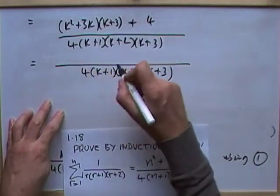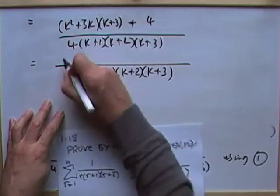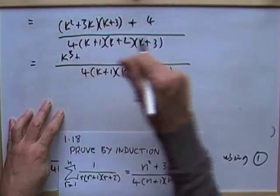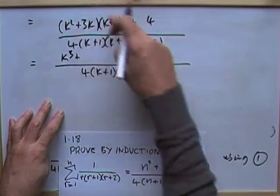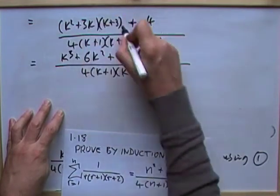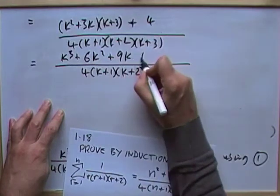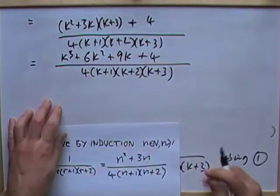Well, the top part, when I multiply it out, would be k cubed plus 3k squared, and 3k squared is 6k squared, plus 9k, plus 4.